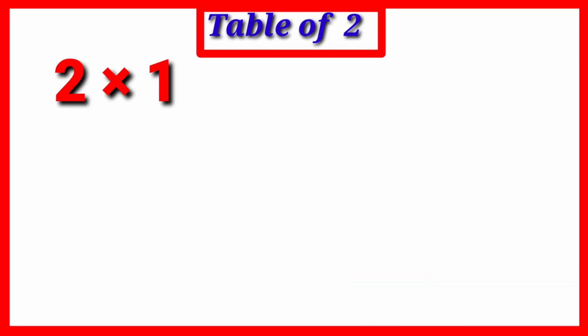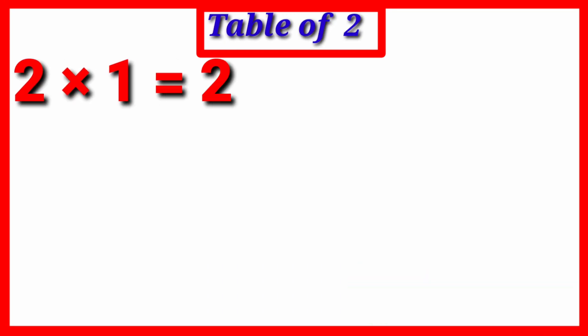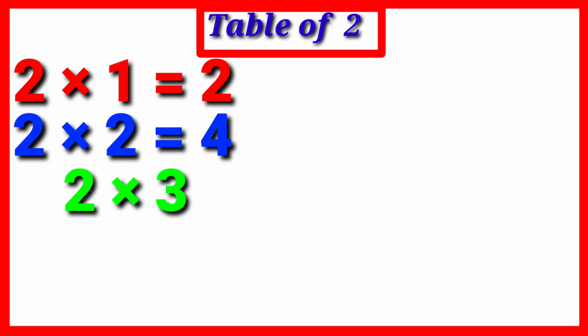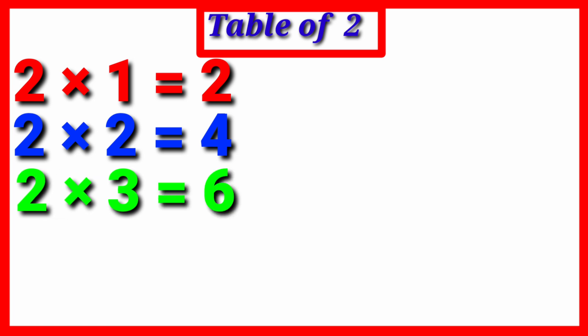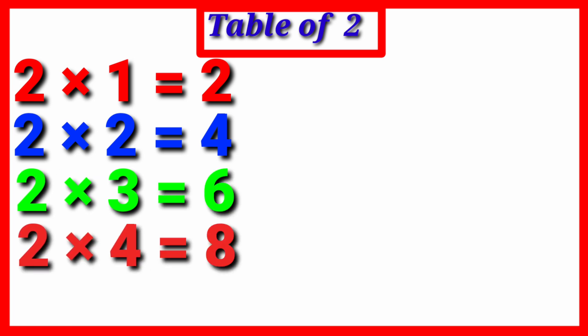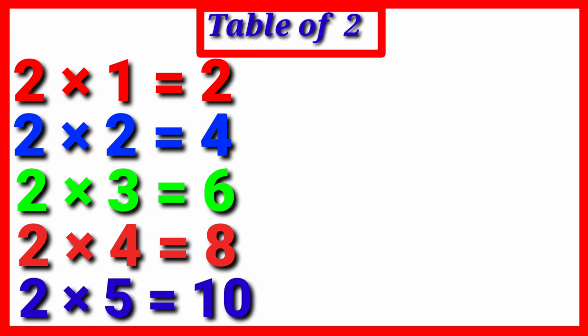Let's learn table 2. 2 1s are 2. 2 2s are 4. 2 3s are 6. 2 4s are 8. 2 5s are 10.